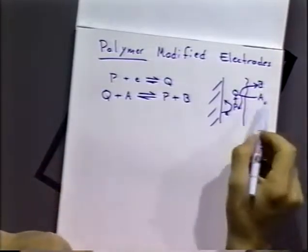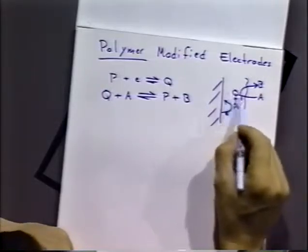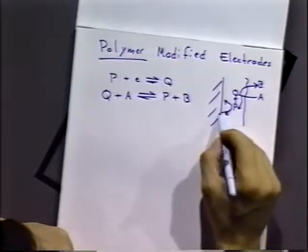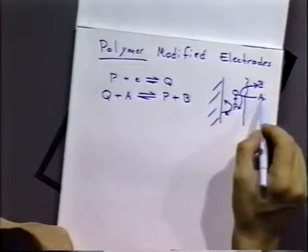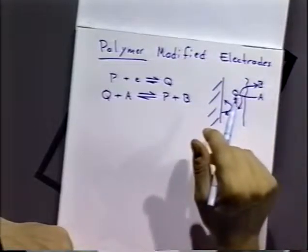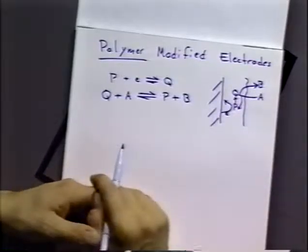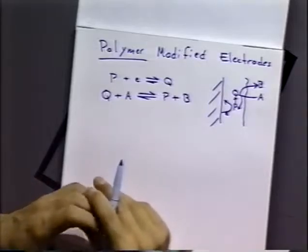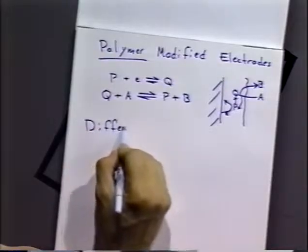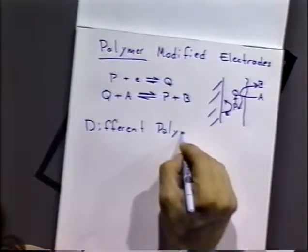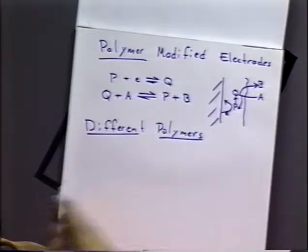When we want to make a polymer film like this, the question is how does A get into that polymer film and react with molecule Q? How can we generate Q? How do we get electrons from the electrode surface out through the polymer to reach P? And once we've got those electrons to P, how does the incoming material A get to Q to do the reaction? How does B exit and so on? These are all functions of the type of polymer modified surface we've got. Let's briefly summarize our different polymer types.